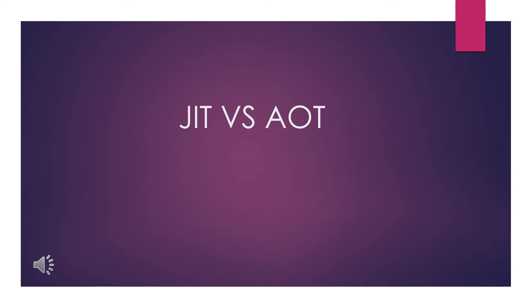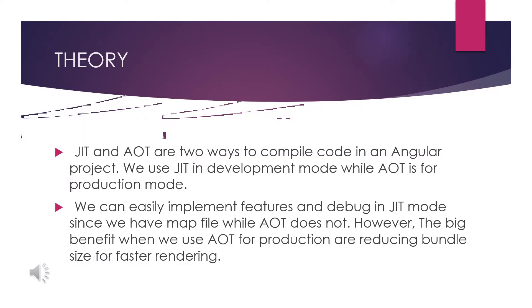In this video we are going to see the differences between JIT and AOT compilers. JIT is just-in-time compiler and AOT is ahead-of-time compiler. Both are compilers used for compiling Angular applications and TypeScript code into JavaScript code. That's the main usage of these things, and we'll look at the main differences between these two.